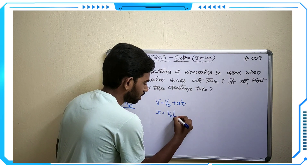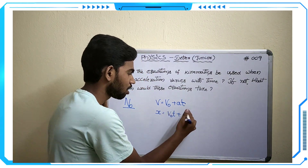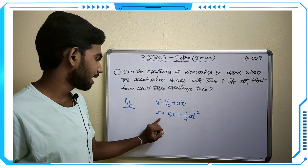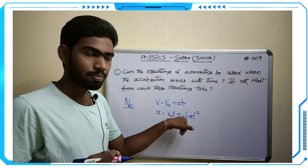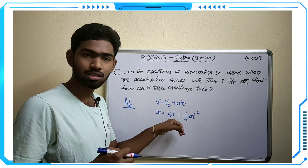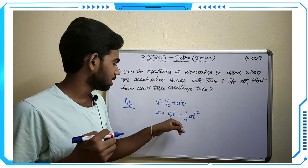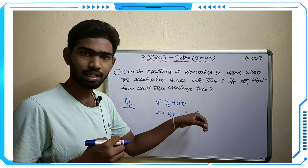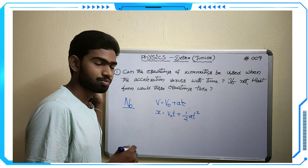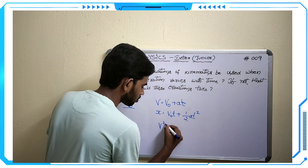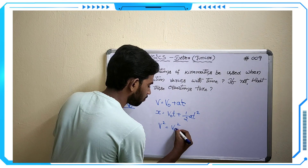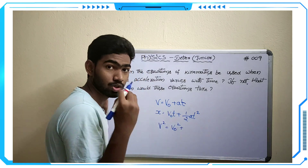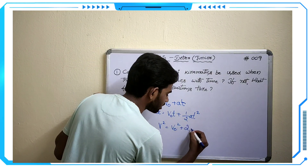The second kinematic equation is x = v₀t + ½at², which we also write as s = ut + ½at². Here x represents displacement, v₀ or u is initial velocity, a is acceleration, and t is time. The third equation is v² = v₀² + 2ax, which you may remember as v² − u² = 2as, where s is displacement.